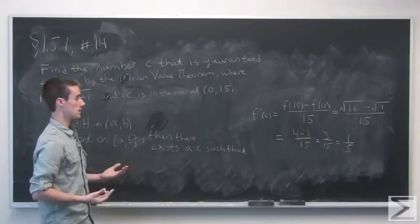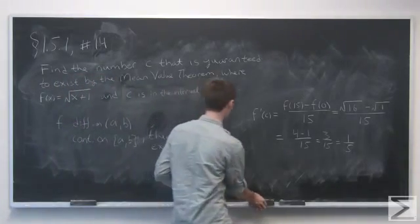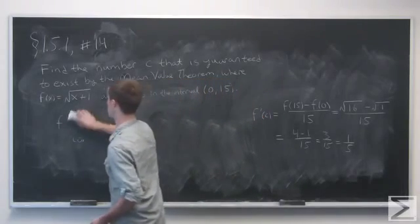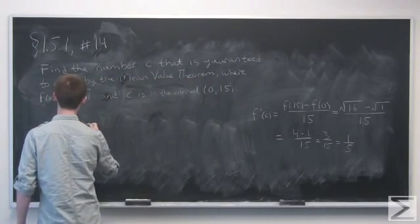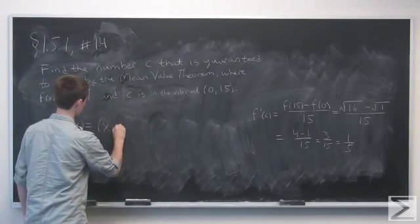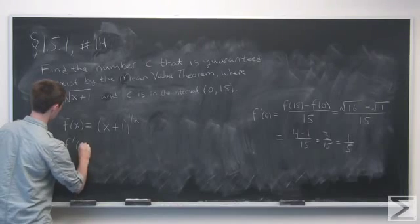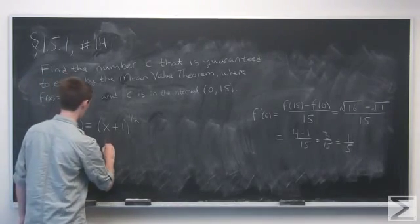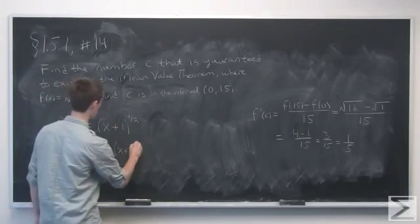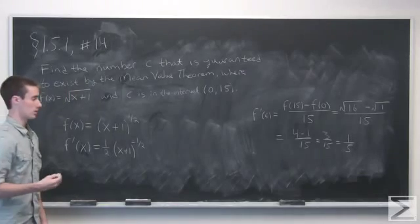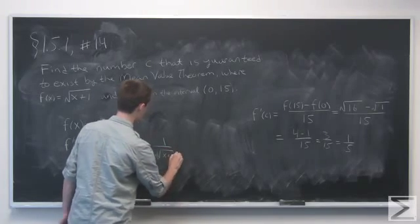Now we need to find the number c such that f prime of c is equal to 1 fifth. The first step is to calculate the derivative of f. We know that f of x equals the square root of x plus 1, or we can rewrite this as x plus 1 to the 1 half. So f prime of x is equal to 1 half times x plus 1 to the negative 1 half, which we can rewrite as 1 over 2 times the square root of x plus 1.